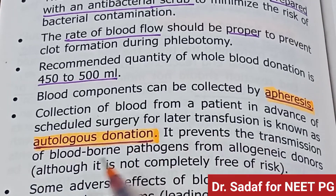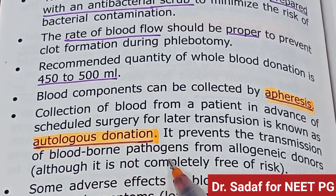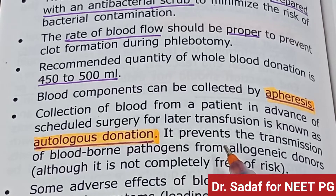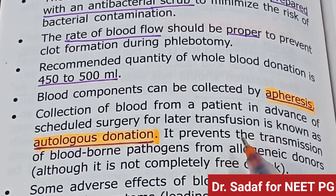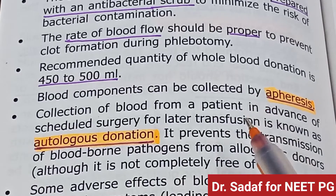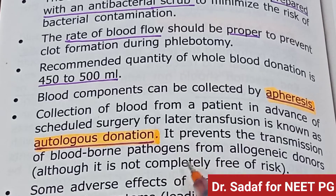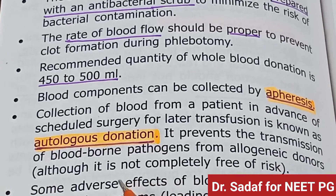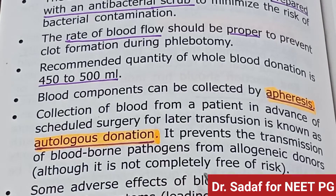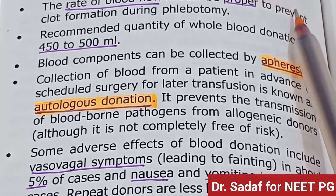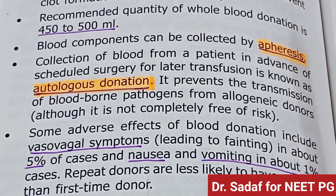Autologous donation prevents the transmission of blood-borne pathogens from allogeneic donors, although it is not completely free of risk. Some adverse effects of blood donation include vasovagal reactions leading to fainting in about 5% of donors, nausea and vomiting in about 1%.